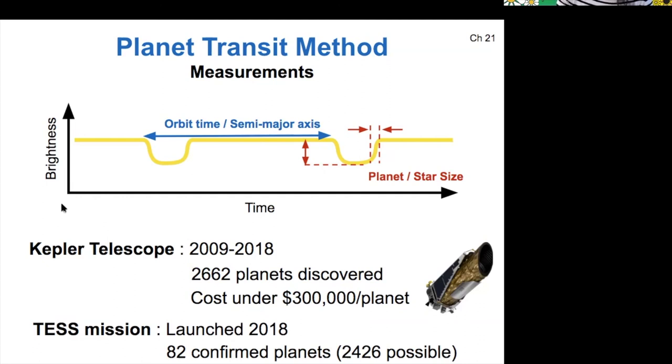Other questions about the transit method? Okay, this is the method that you'll use in your lab. So I'll be giving you real exoplanet data and you will be looking at the light curve to figure out how many planets are in the system and how big are the planets.